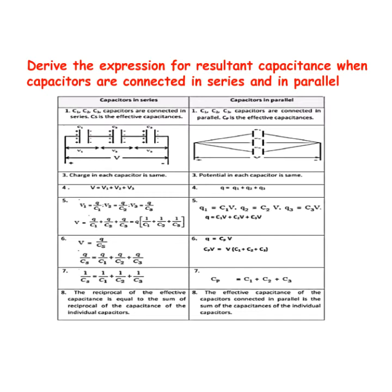Then V1 is equal to Q divided by C1, V2 is equal to Q divided by C2, V3 is equal to Q divided by C3. So V is equal to Q/C1 plus Q/C2 plus Q/C3. Taking Q common, this becomes Q into (1/C1 plus 1/C2 plus 1/C3).